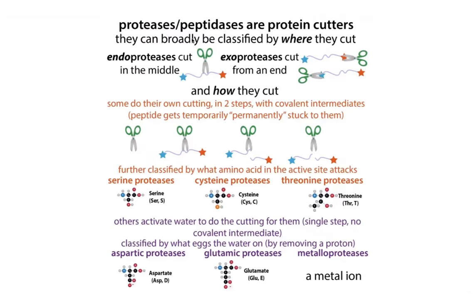Different enzymes can catalyze the same overall reaction in different ways. We could cut a peptide with a serine protease using covalent catalysis, or with a cysteine protease — basically the same strategy but with a cysteine instead of a serine. Or we could use an aspartic protease, which uses aspartates to make water react. There are also metalloproteases that use metal ions, and glutamic proteases similar to aspartic proteases but using glutamate instead of aspartate.